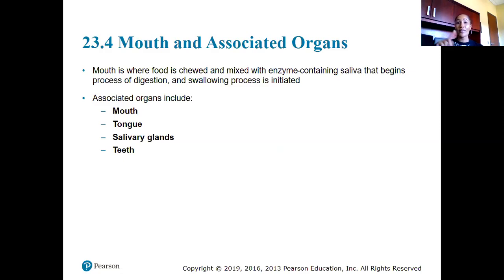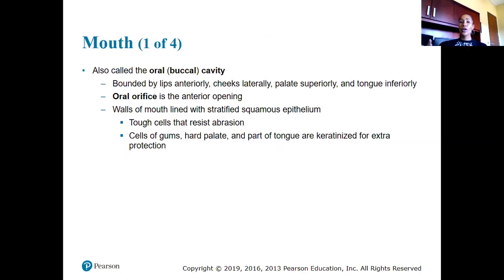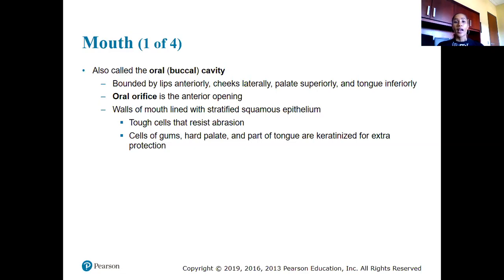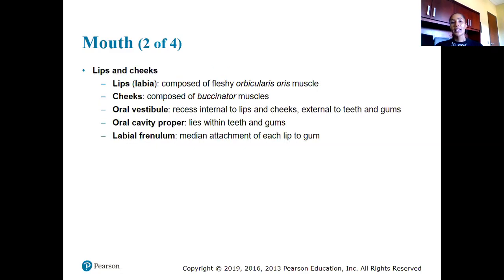Associated organs with the oral cavity include the mouth, tongue, salivary glands, and teeth. The mouth — also called the oral or buccal cavity — is bounded by lips anteriorly, cheeks laterally, a palate superiorly, and a tongue inferiorly. The oral orifice is the anterior opening, and the walls of the mouth are lined by stratified squamous epithelia, with tough cells that resist abrasion. Cells of the gum, hard palate, and part of the tongue are keratinized for extra protection.